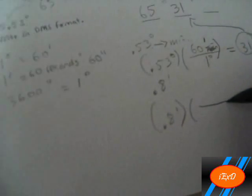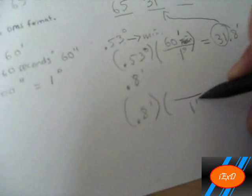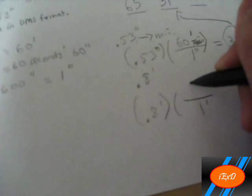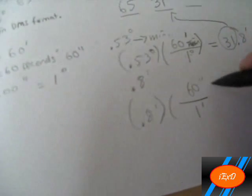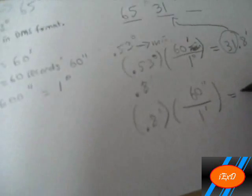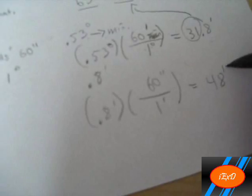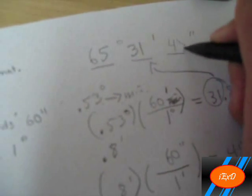0.8 minutes, times 1 minute on the bottom to cancel out the minutes, 60 seconds on the top, multiply, and it becomes 48 seconds. Now we plug it in right here, like that, and there you have it.